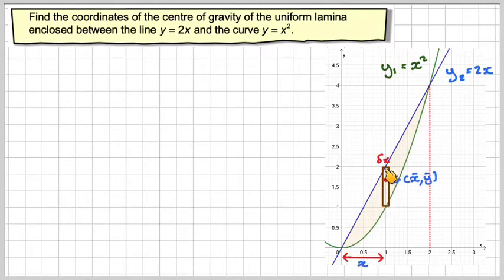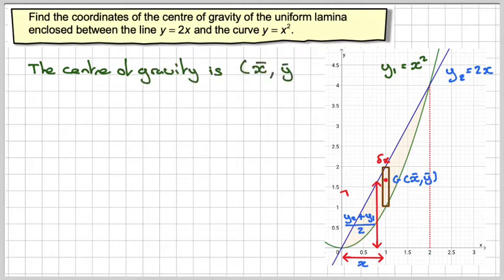Each of these will be a little strip here. The centre of gravity will be x away from the y-axis, but from the x-axis it will be the average of y2 plus y1 divided by 2. It's the average of all these, and they're all summed up making an integral. So the centre of gravity is x bar, y bar.